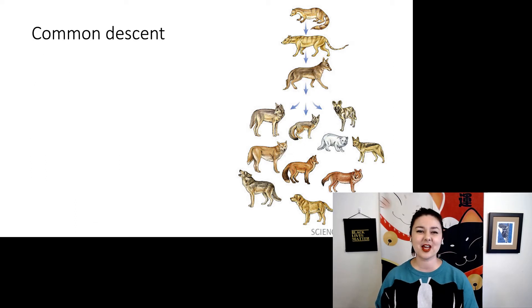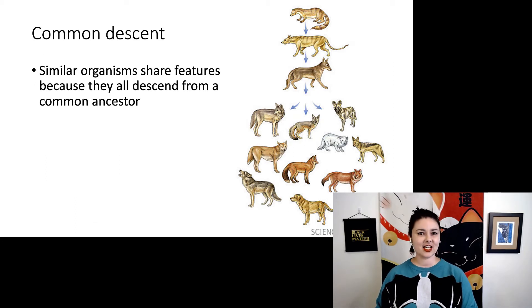First off, we have common descent. Common descent is the idea that organisms are similar because they share features from a recent common ancestor. In this graphic here, we're looking at different types of canids or different types of dogs. We have dogs and wolves, coyotes, all of them look pretty similar because they have a recent common ancestor. And the more closely related organisms are, the more similar they will be.